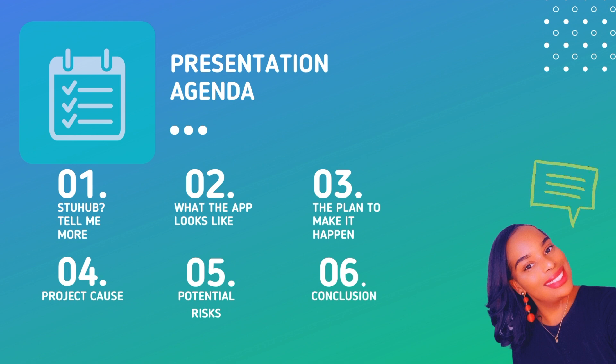Number two: what the app looks like. This is our creative direction about the application and its potential in terms of images, visuals, video, etc. — the detailing of the app. Number three: the plan to make it happen. This is where we talk about our roadmap, main KPIs, timeline, etc. This section really highlights the processes that led to the final execution of the project.